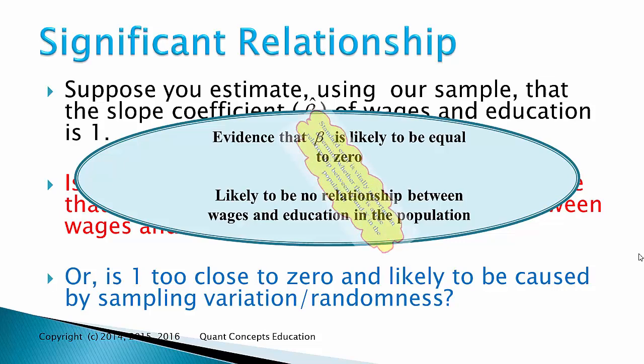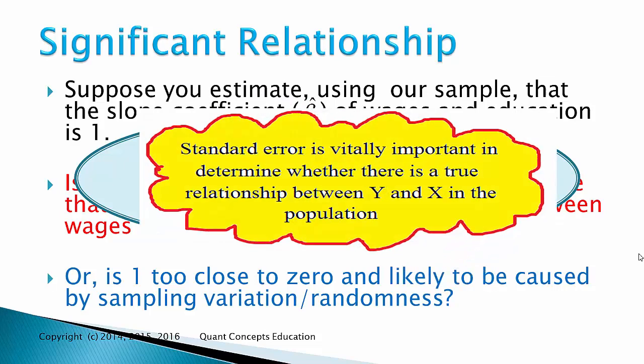You can see that the standard error is vitally important in determining whether there is a true relationship between x and y in the population, as it gives us a sense of how far our sample beta estimates are from 0.